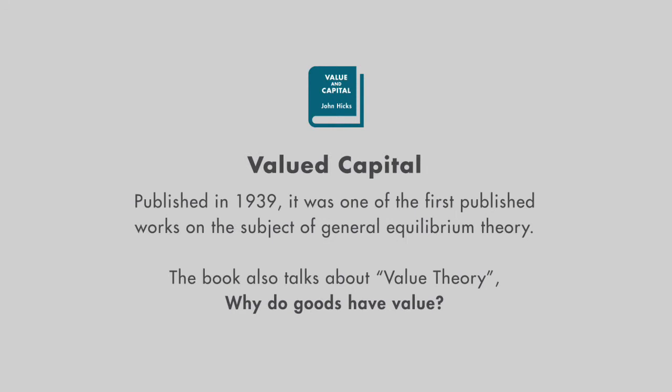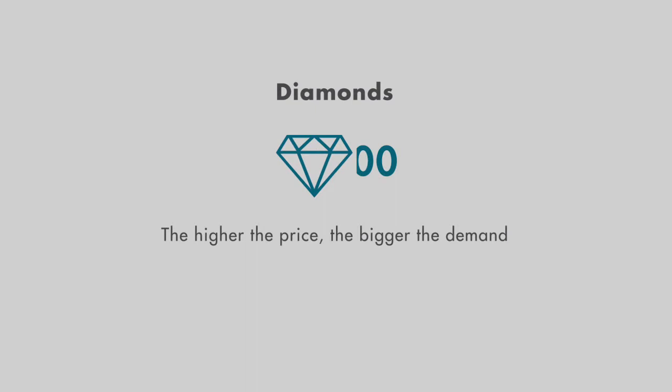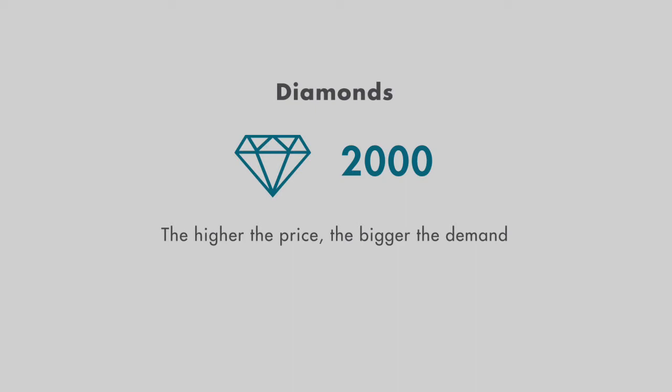John Hicks' third contribution was his book, Value and Capital, published in 1939. It was one of the first published works on the subject of general equilibrium theory. The book also talks about value theory, which brings up the question: why do goods have value? Let's take diamonds for example. The higher the price of a diamond, the more people want to buy diamonds. It seems to become the 'it' thing to have, and everybody wants to be seen with expensive things. So in other words, the higher the price, the bigger the demand.